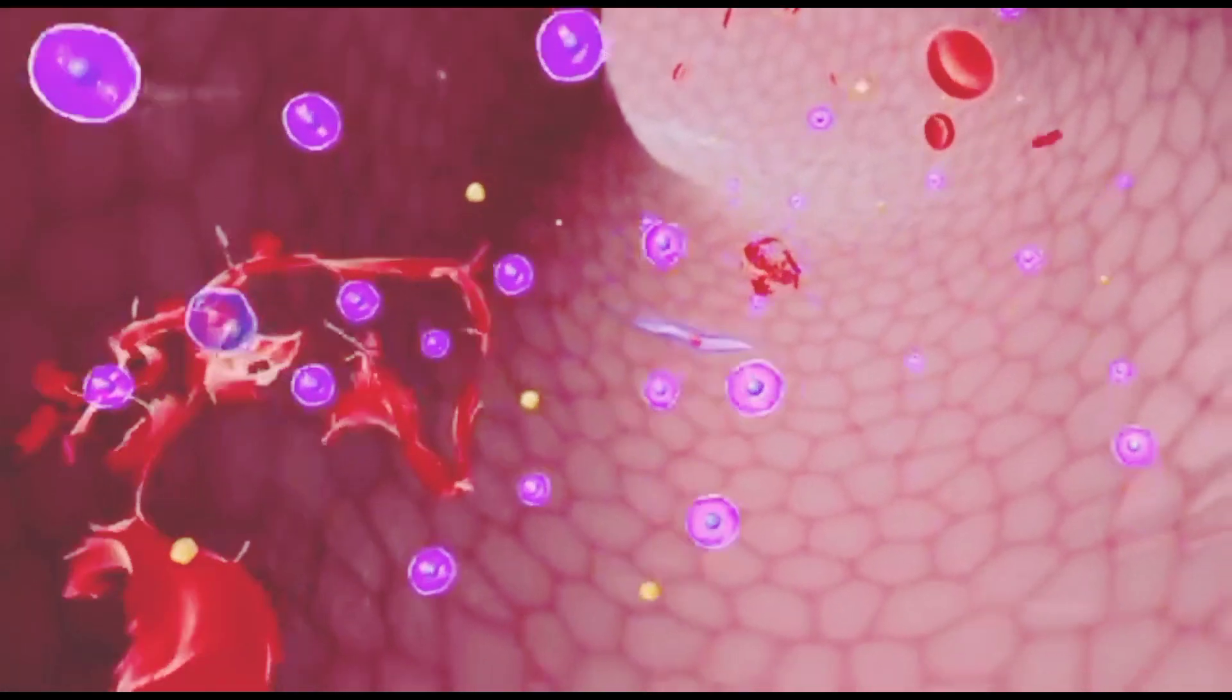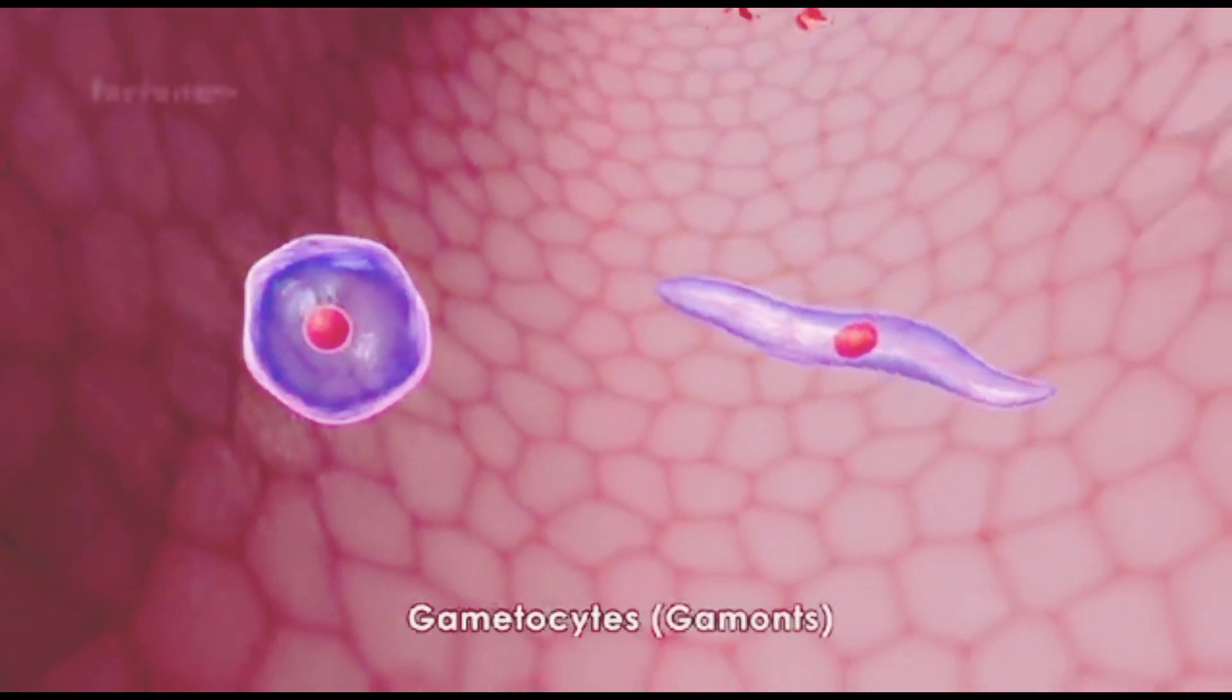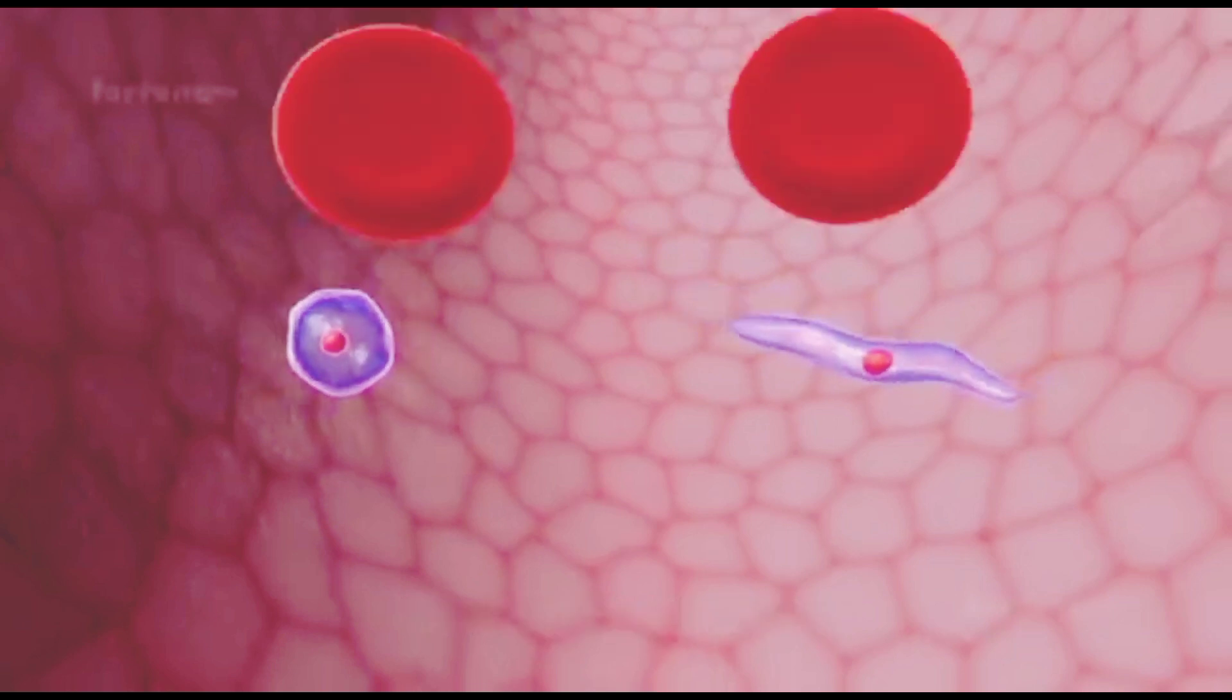Some of the merozoites will differentiate into gametocytes or gametes, which will not develop any further in the red blood cells and will not rupture the cells.